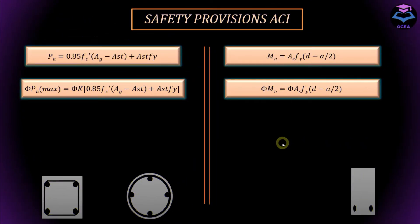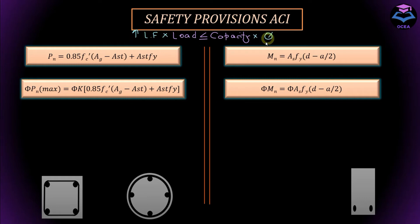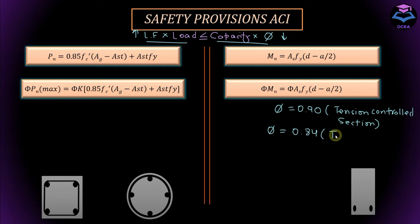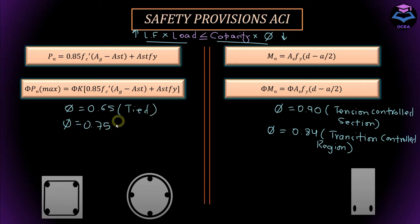Let's talk about the safety provisions. In the design equation, the left-hand side has load and the right-hand side has capacity. To make the design conservative, the ACI code increases the left-hand side by multiplying it with load factors and decreases the right-hand side by multiplying with a strength reduction factor phi. For beams, phi ranged from 0.90 for tension-controlled sections to 0.84 for transition-controlled sections. For tied columns the strength reduction factor is 0.65 and for spiral columns it is 0.75.